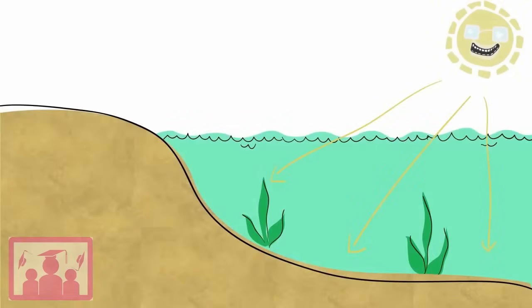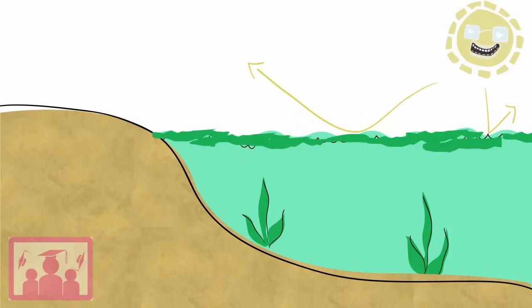This algal bloom will absorb sunlight shining on the water, so the sunlight can't reach the bottom. Plants who need this light to photosynthesize will die.